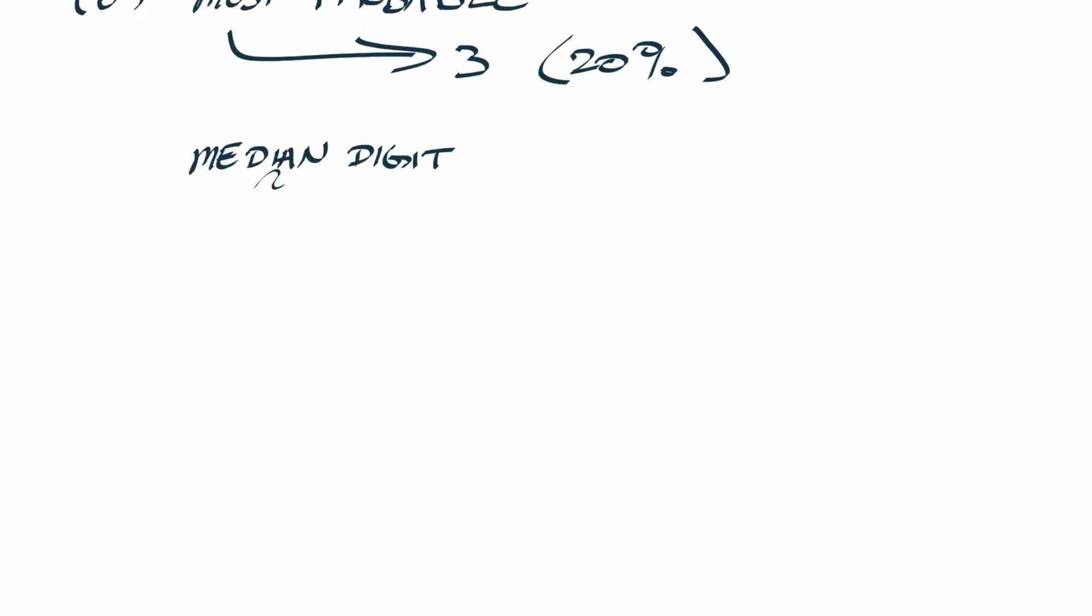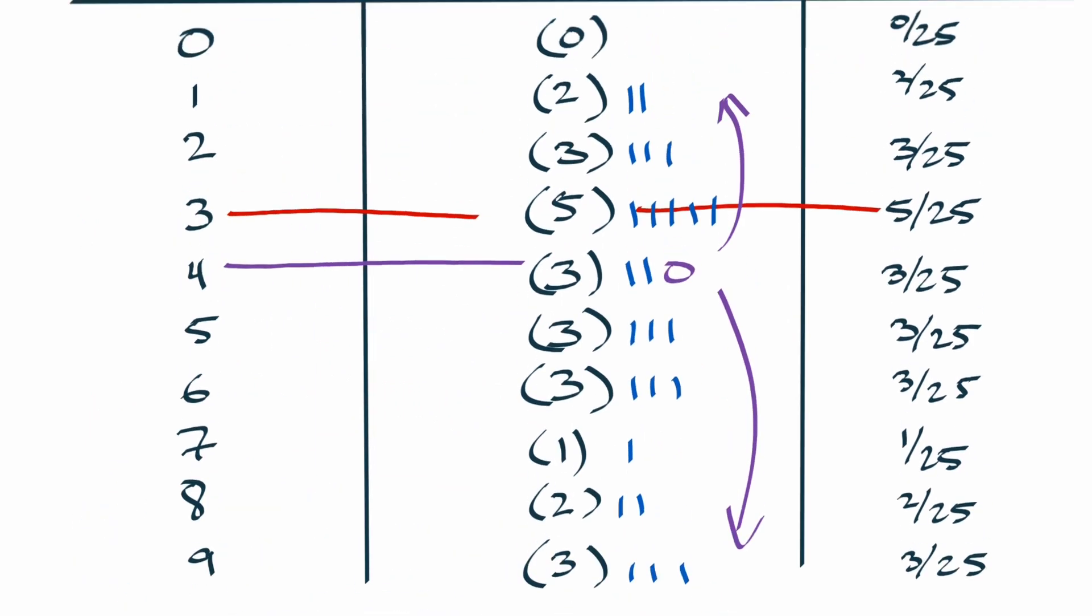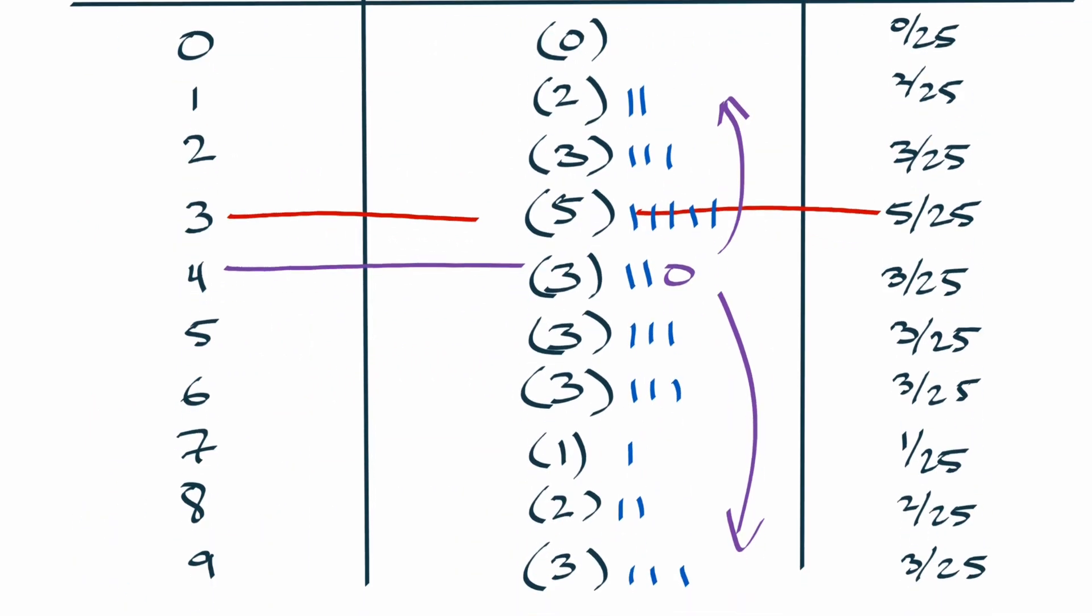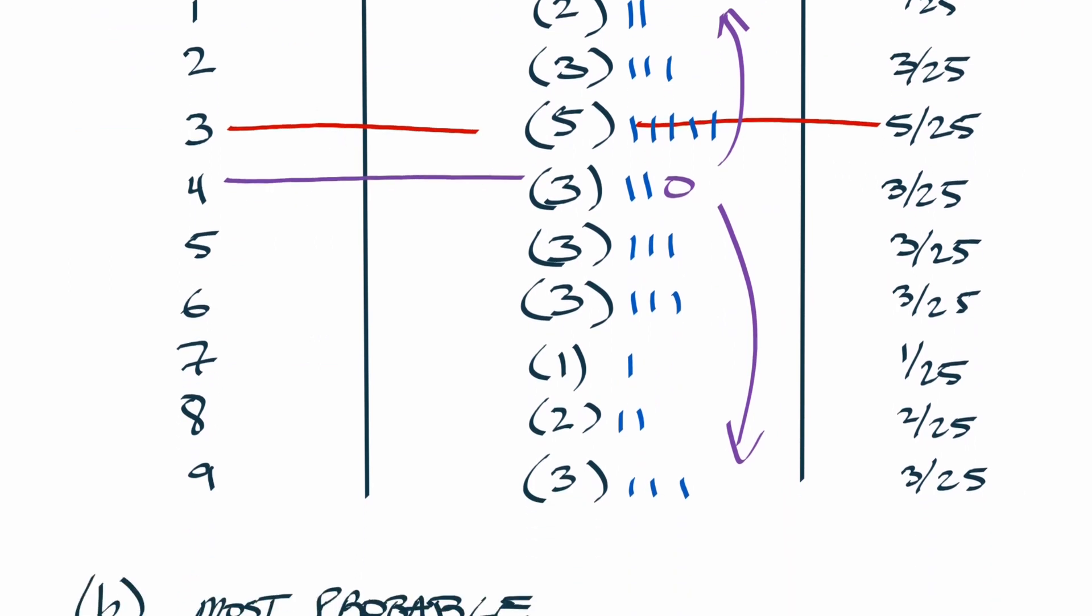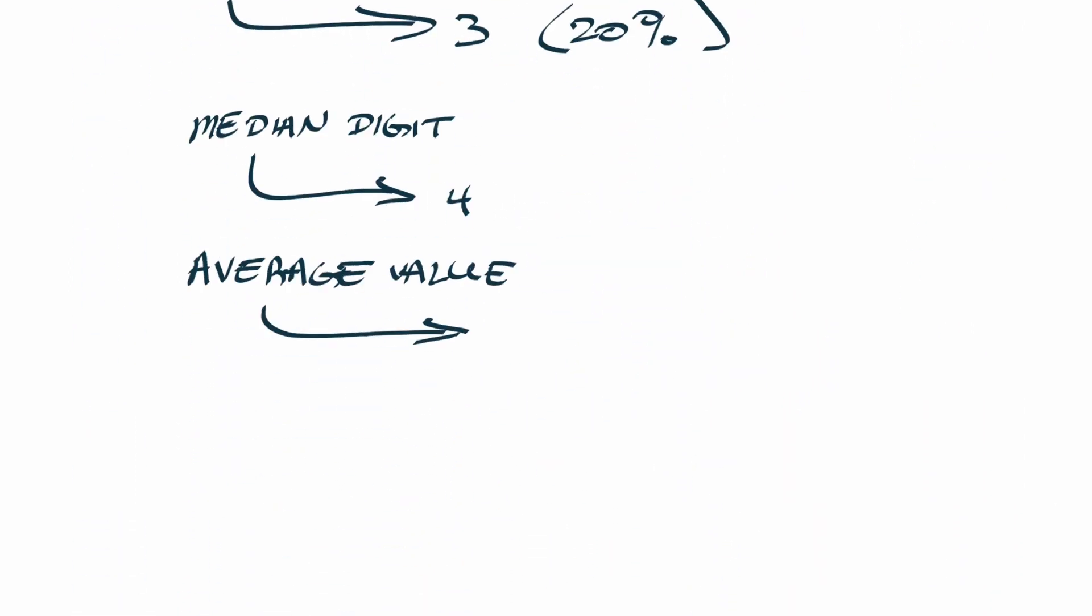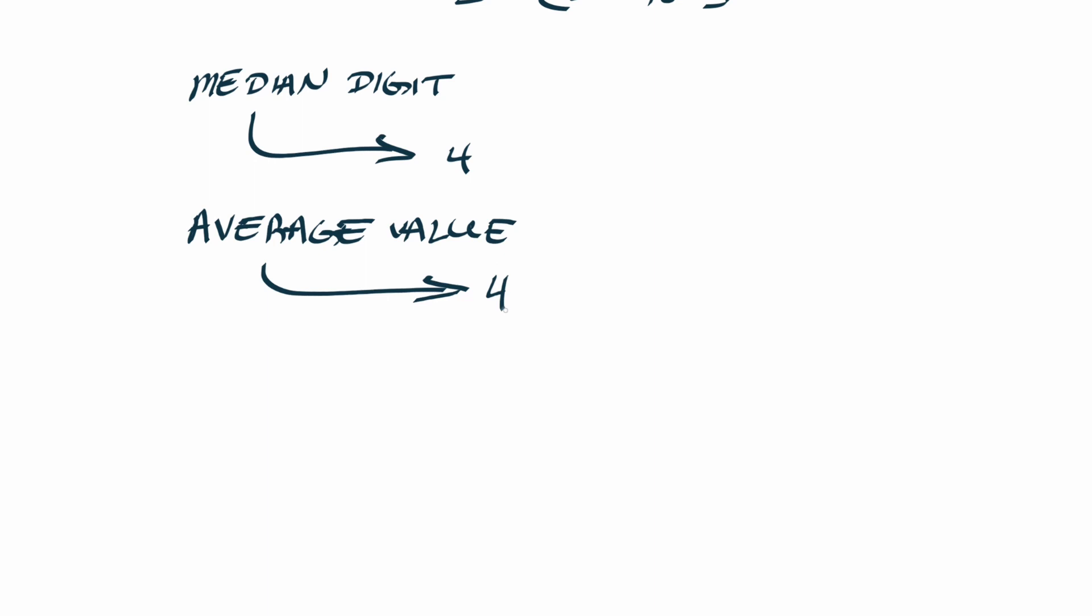And then we want to know what's the average value. So average value is a simple enough calculation that isn't really worth doing. Essentially just take your average value, you have 25 values total. You have to do the integer one has two occurrences, integer two has three occurrences and so on. Calculate your average value, you're going to get 4.72 for that.